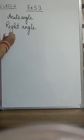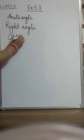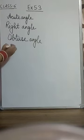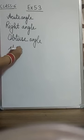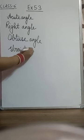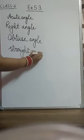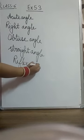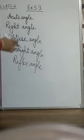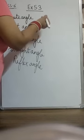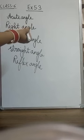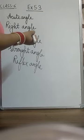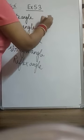Then we have obtuse angle. Then we have straight angle. An acute angle is one in which the angle is lying between 0 to 90 degrees, or it is less than 90 degrees.